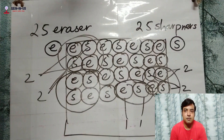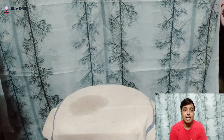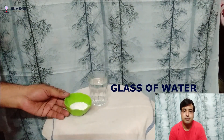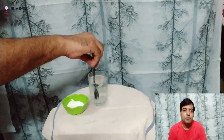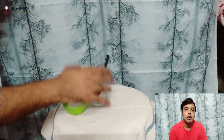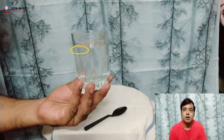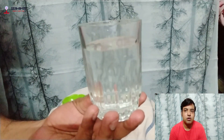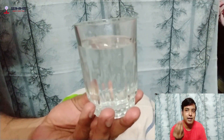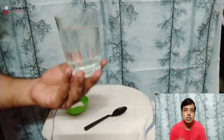Similarly, if I take a glass of water and add salt to it — here is the glass of water and here is the salt — I add one spoon of salt into the water and mix it. You can try this at home. From this glass of salt water, if you take any portion of the water, you will find the same amount of salt and it will taste salty.